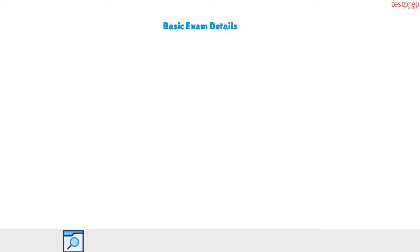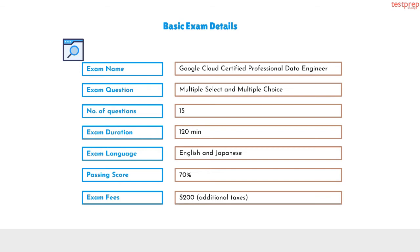Now we will talk about exam details. The Google Data Engineer Certification Exam comprises 15 questions which are multiple select and multiple choice. You will be given 2 hours to complete the test and score 70% to get through the exam. Further, the exam is valid for 2 years and is available in 2 languages, English and Japanese. Above all, the exam costs 200 US dollars.